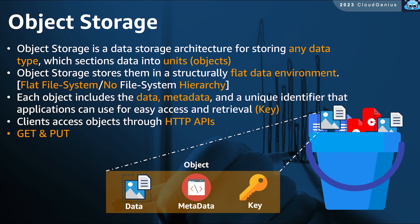The last storage topic to discuss is going to be object storage. Object storage is a relatively new storage architecture that can store any data type and at any scale. In object storage, we do not follow a file system, or sometimes it is called a flat file system approach. You just have a big storage container and inside it, there are no directories or sub-directories — just one big flat container that you write files directly to, and these files are now going to be called objects.